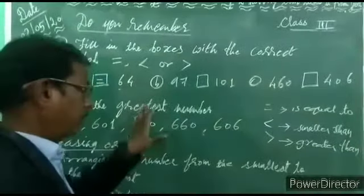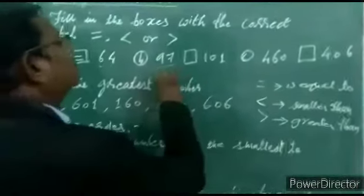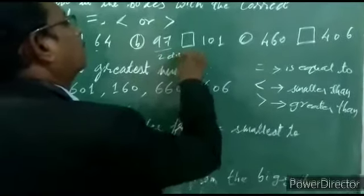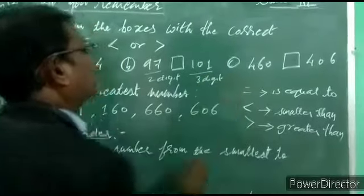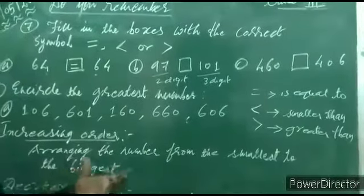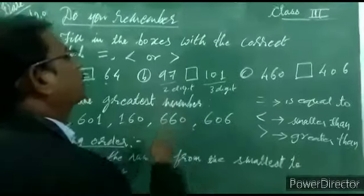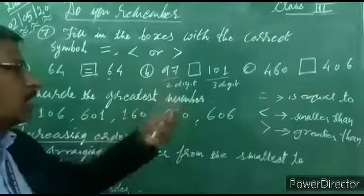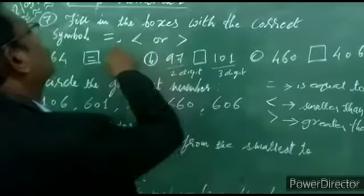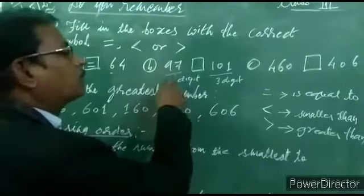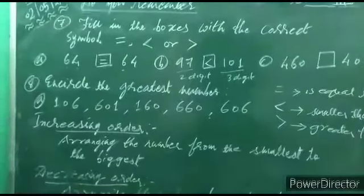Next, example B. First, count the number of digits on both sides. Here, 1, 2 — this is a 2-digit number. And here, 1, 2, 3 — a 3-digit number. Now, a 3-digit number will be greater than a 2-digit number. On the left hand side, 97 is written, and on the right hand side, 101 — a 3-digit number. So 97 is less than 101; put the less than sign.